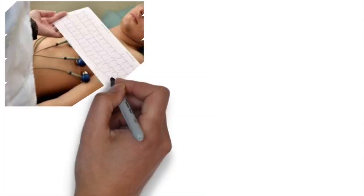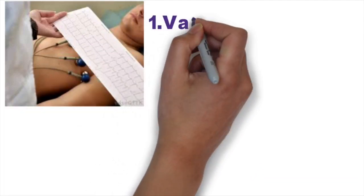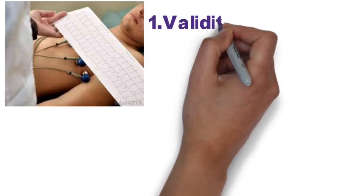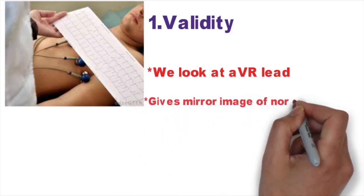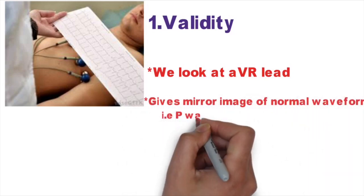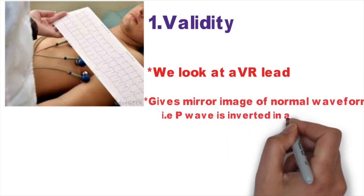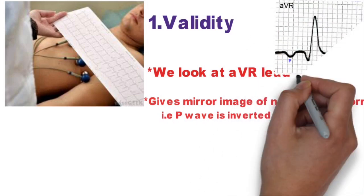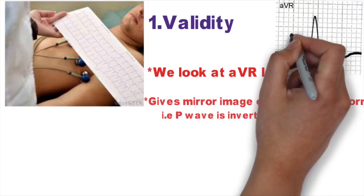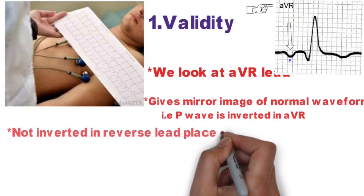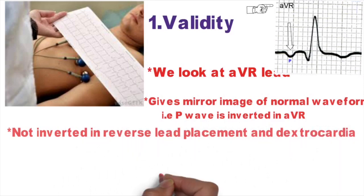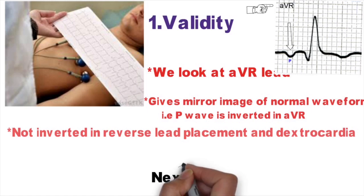When a strip of ECG comes to our hand, we should first check whether it is valid or not. For validity, we look at the AVR lead. AVR gives a mirror image of the normal waveform, so an inverted P wave is expected in AVR. If the P wave is not inverted in lead AVR, it means either lead placement is reversed or the patient has dextrocardia, and we should send the patient for a repeat ECG.